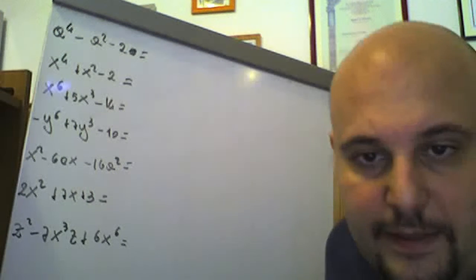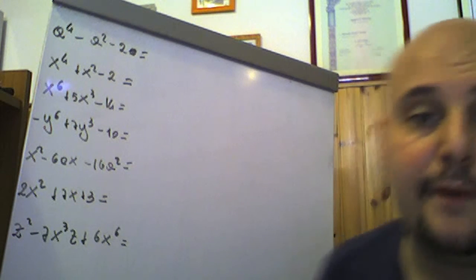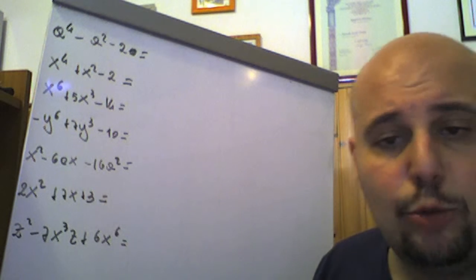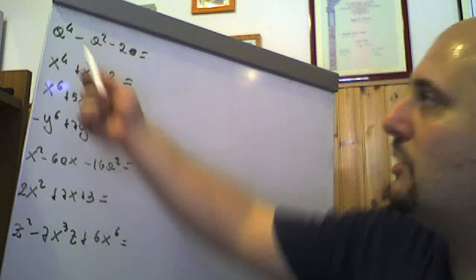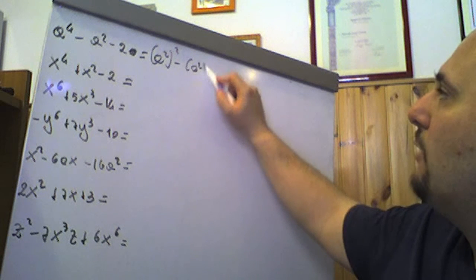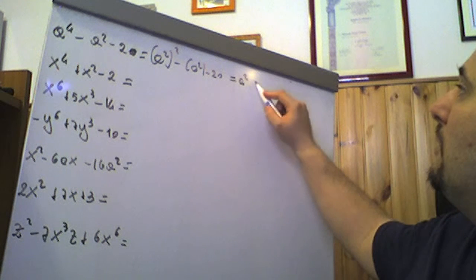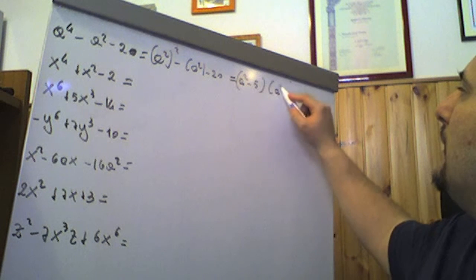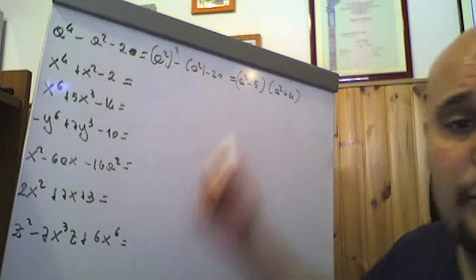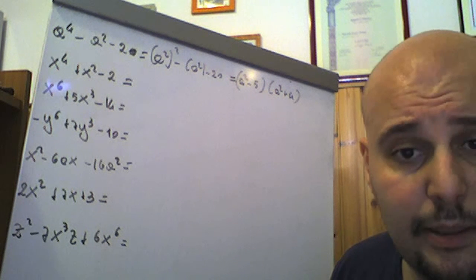Proseguiamo con un'altra tipologia sempre tratta dal Bergamini, Trifone e Barozzi: a⁴ − a² − 20. Questi sono trinomi biquadratici, poiché a⁴ = (a²)². Possiamo considerare questo come un trinomio di secondo grado nella variabile a², cioè (a²)² − a² − 20. Guardando −20: −5 + 4 = −1, quindi si scrive (a² − 5)(a² + 4). Potremmo anche porre a² = t e arrivare a (t − 5)(t + 4), ovvero (a² − 5)(a² + 4).